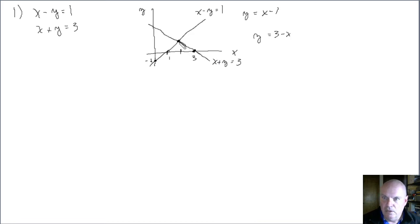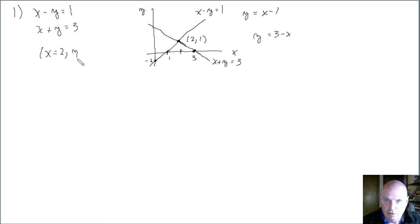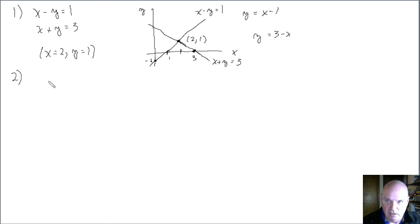So these two lines intersect — they intersect at the point (2, 1). With x = 2 and y = 1: 2 - 1 = 1, and 2 + 1 = 3. So a solution to this system of equations is x = 2, y = 1. And indeed, that's actually the only solution to this particular system of equations. So that system has one solution.